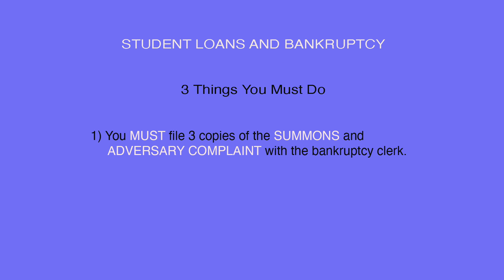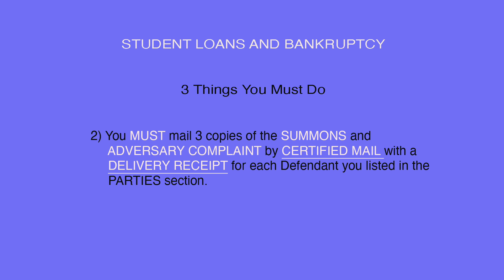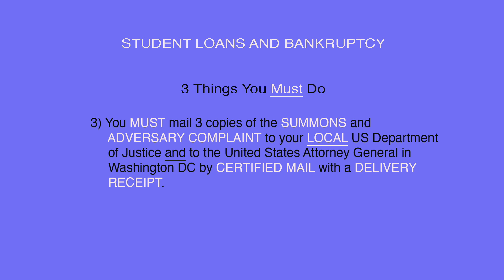Three things you must do: One, you must file three copies of the summons and adversary complaint with the bankruptcy clerk. Two, you must mail three copies of the summons and adversary complaint by certified mail with a delivery receipt for each defendant you listed in the party section. Three, you must mail three copies of the summons and adversary complaint to your local U.S. Department of Justice and to the United States Attorney General in Washington D.C. by certified mail with a delivery receipt.